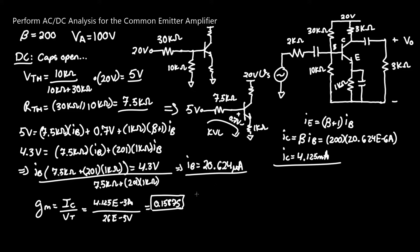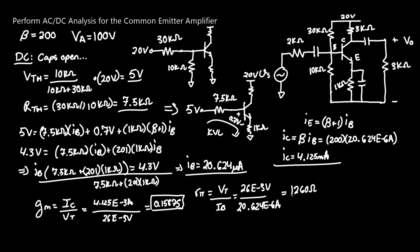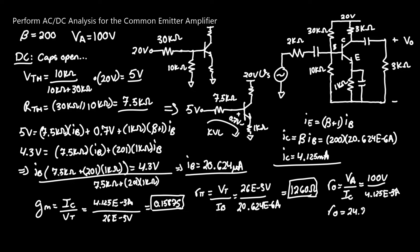We still need r_π and r_o. r_π equals V_T / I_B = 26 mV / 20.624 µA, giving 1260 Ω or 1.26 kΩ. Finally, r_o equals the Early voltage V_A / I_C = 100 V / 4.125 mA, which evaluates to 24.24 kΩ.